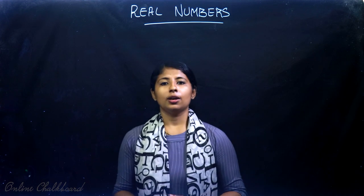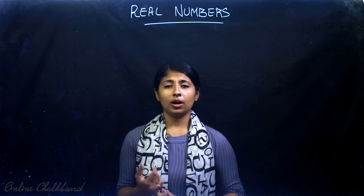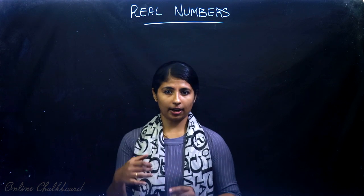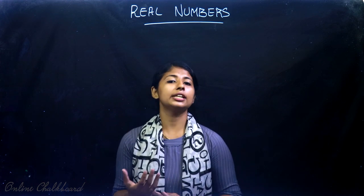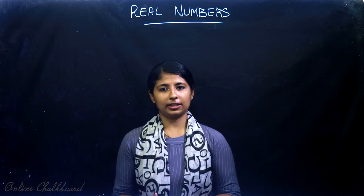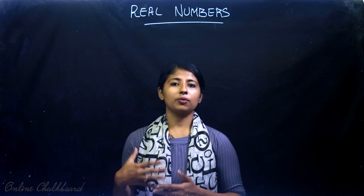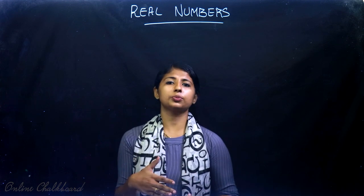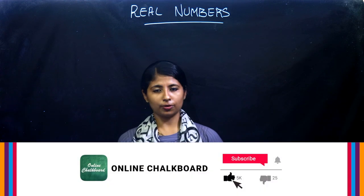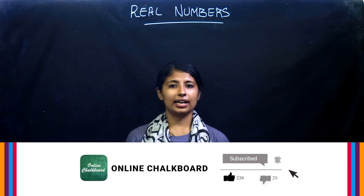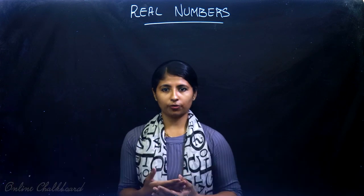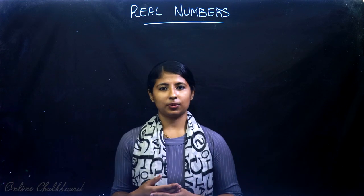That's all for today. We have understood how to differentiate between a rational number having a terminating decimal expansion and a non-terminating but recurring decimal expansion. In this video we discussed how to understand them, and in the next video we'll be discussing the rest of the exercise questions. If you like this video, do like and share with your friends. We'll see you in the next video. Thank you.